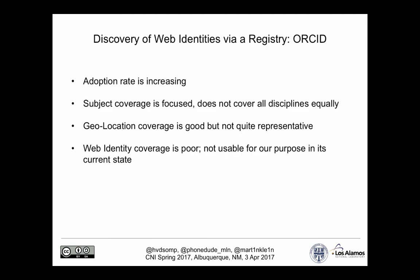A brief summary of these findings: the adoption rate of ORCIDs is increasing, which is a good sign. The subject coverage is fairly focused toward the life sciences — disciplines like the humanities and engineering seem slightly underrepresented. The geolocation seems good for U.S. coverage only; on a global scale it's not quite representative. The web identity coverage seems fairly poor, and as such, using ORCID only as a registry to identify web identities may not quite be applicable yet.